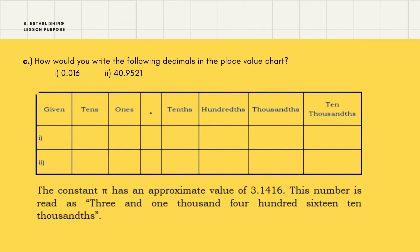How do you write the following decimals in the place value chart? Always locate the decimal point first, then align accordingly. For 0.016: zero ones, decimal point, zero tenths, one hundredth, six thousandths. For 40.9521: four tens, zero ones, decimal point, nine tenths, five hundredths, two thousandths, one ten-thousandth. The constant pi has an approximate value of 3.1416, read as 'three and one thousand four hundred sixteen ten-thousandths.'